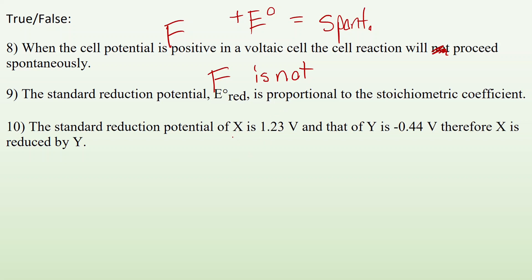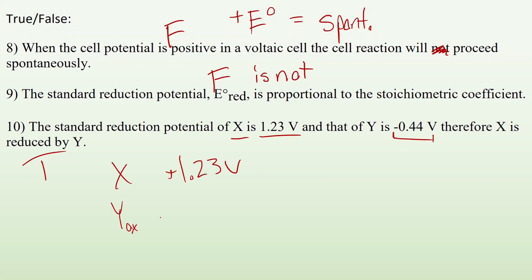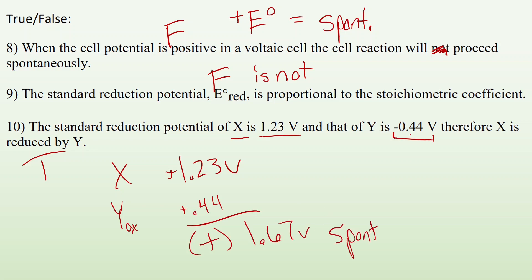Number 10: the standard reduction potential of X is positive 1.23 volts and that of Y is negative 0.44 volts. Therefore X is reduced by Y — this is a true statement. If I were to do the oxidation of Y, that would be positive 0.44. Adding those together, I end up with a positive value — about 1.67 volts — which means it will be spontaneous. If you have Y reacting with X, X will get reduced and Y will be oxidized.